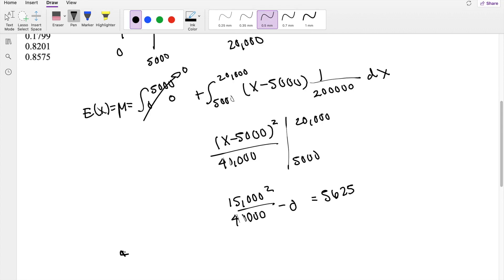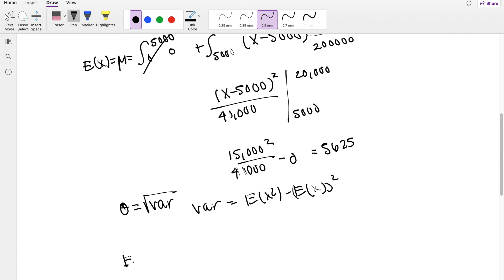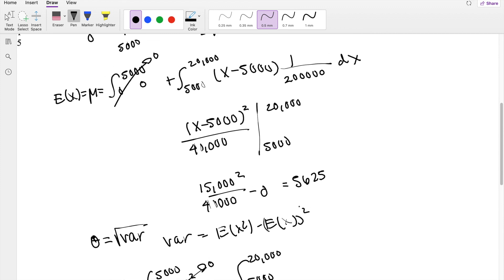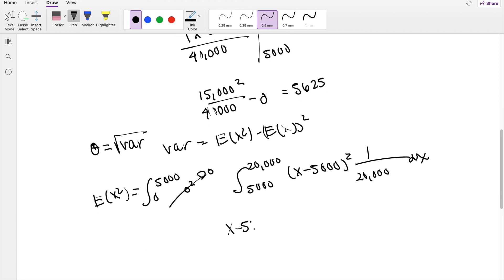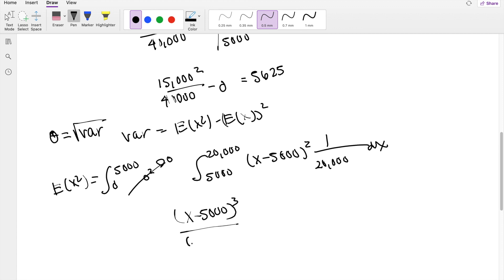In order to find the standard deviation, we know that this equals the square root of variance, where variance equals the second moment minus the first moment squared. So we have to take the second moment. That's going to be equal to 0 to 5,000, the expected value here is 0 squared. This second term from 5,000 to 20,000, you have X minus 5,000 squared, because we're looking for the second moment, and the probability function stays the same, 1 over 20,000 dx.